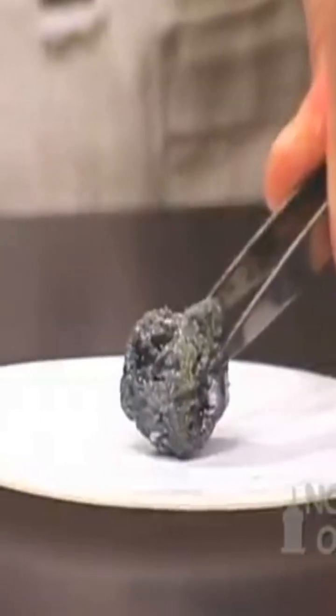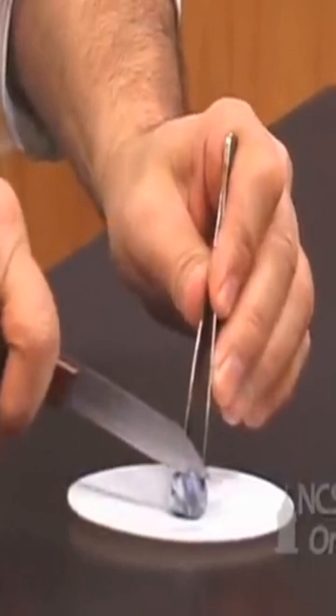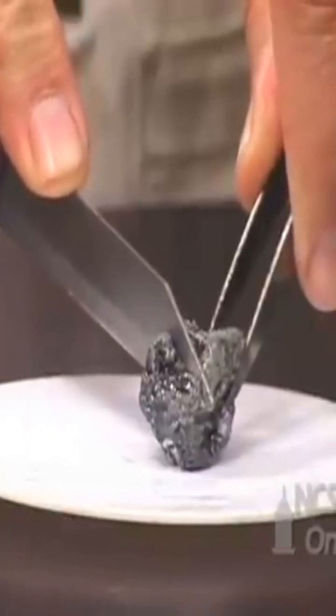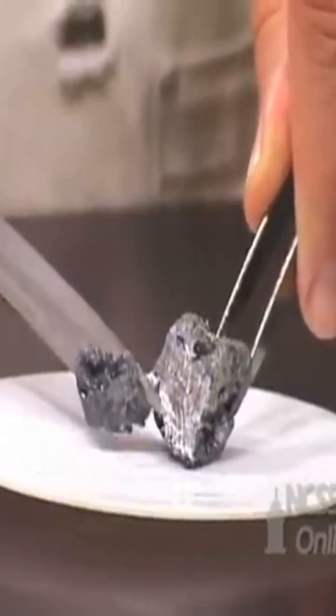As we continue down the column, group 1 metals get softer and softer. The potassium cuts very easily. As we cut through the metal, we expose the shiny metal surface underneath.